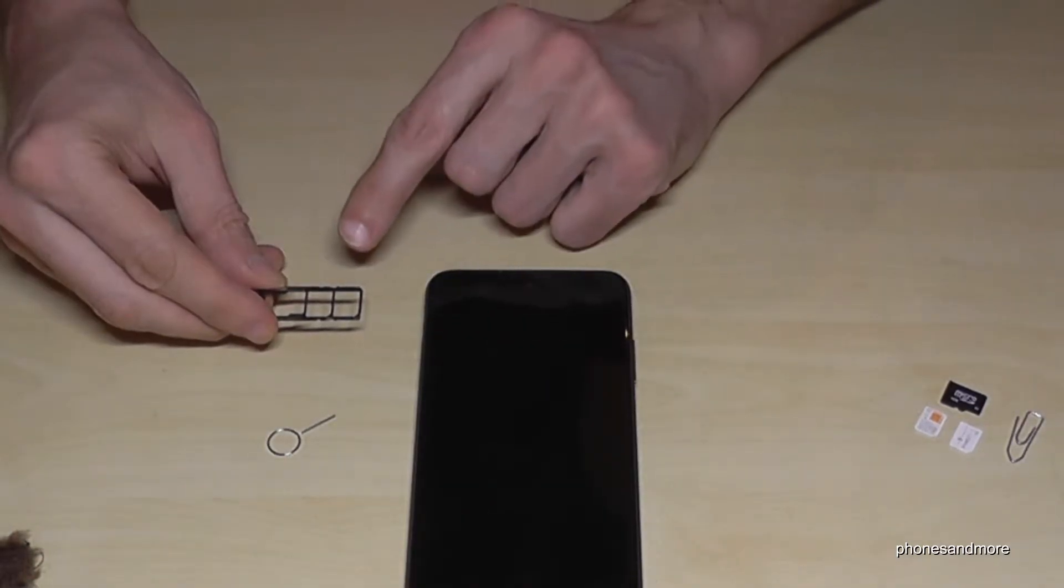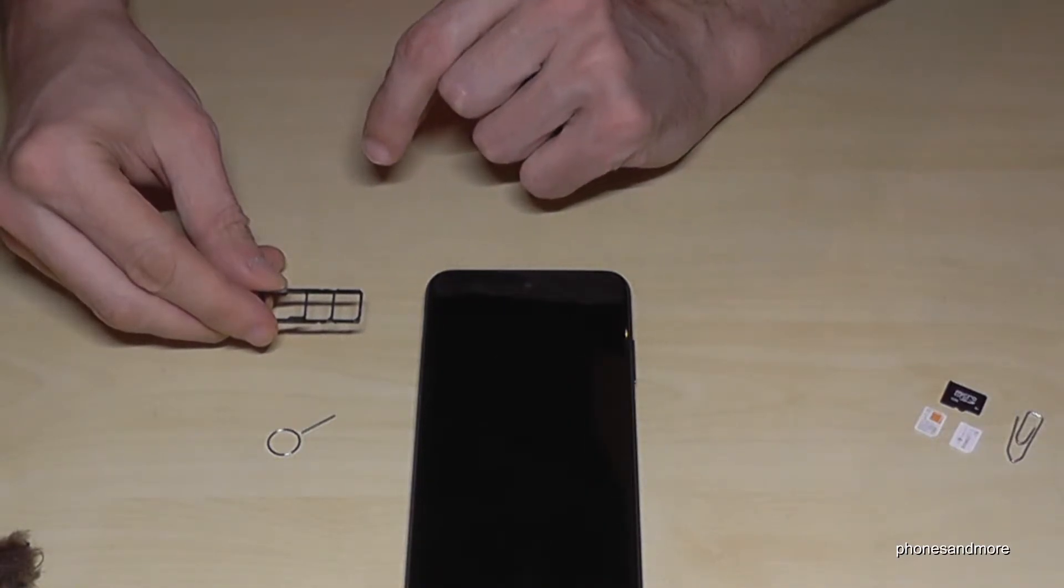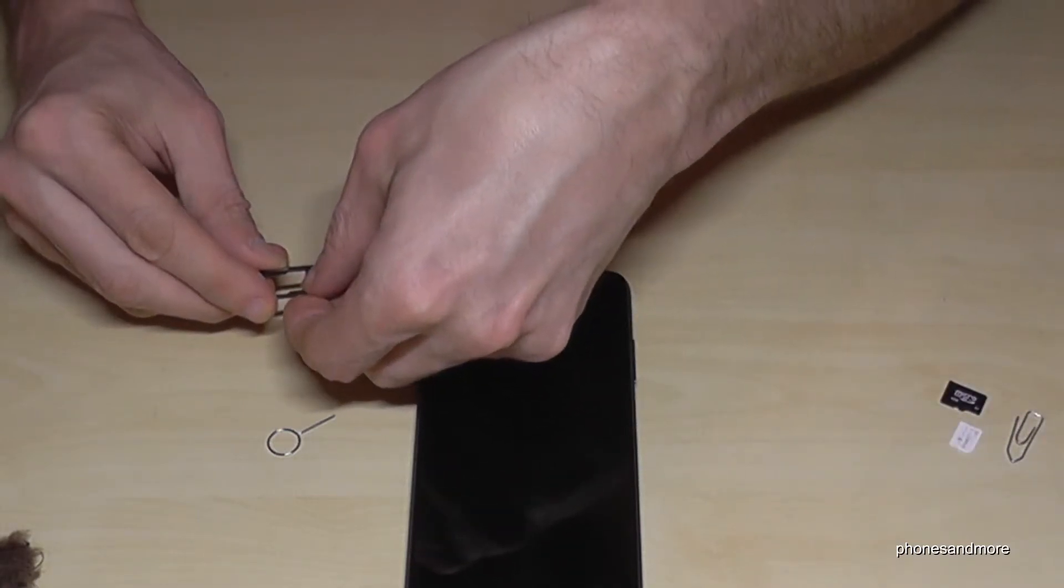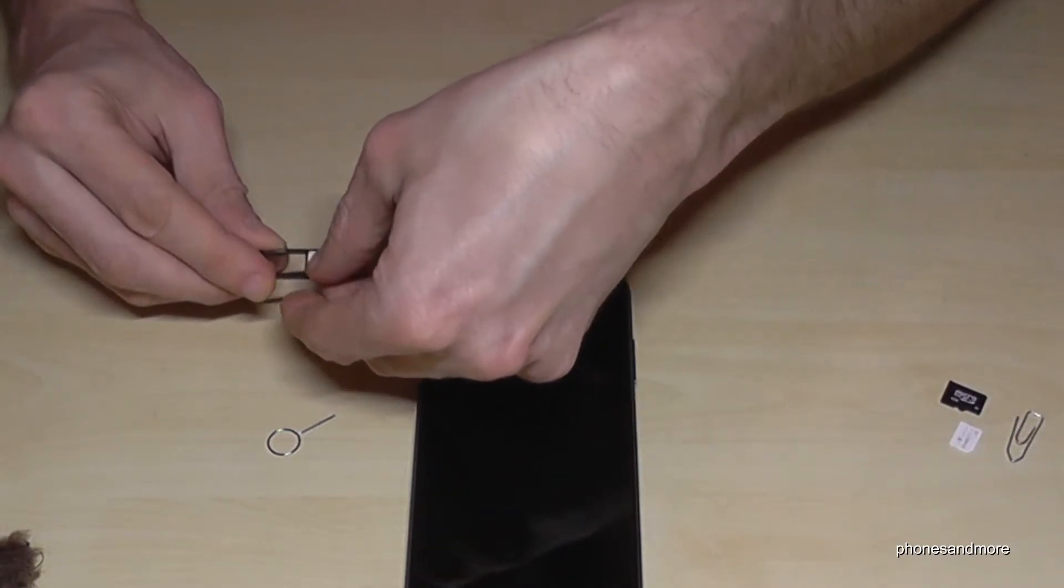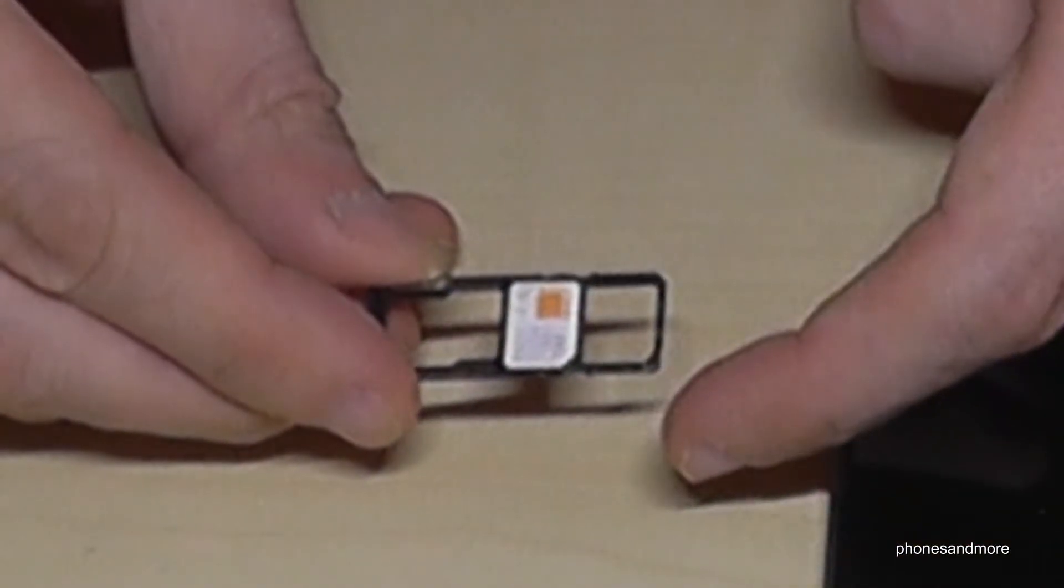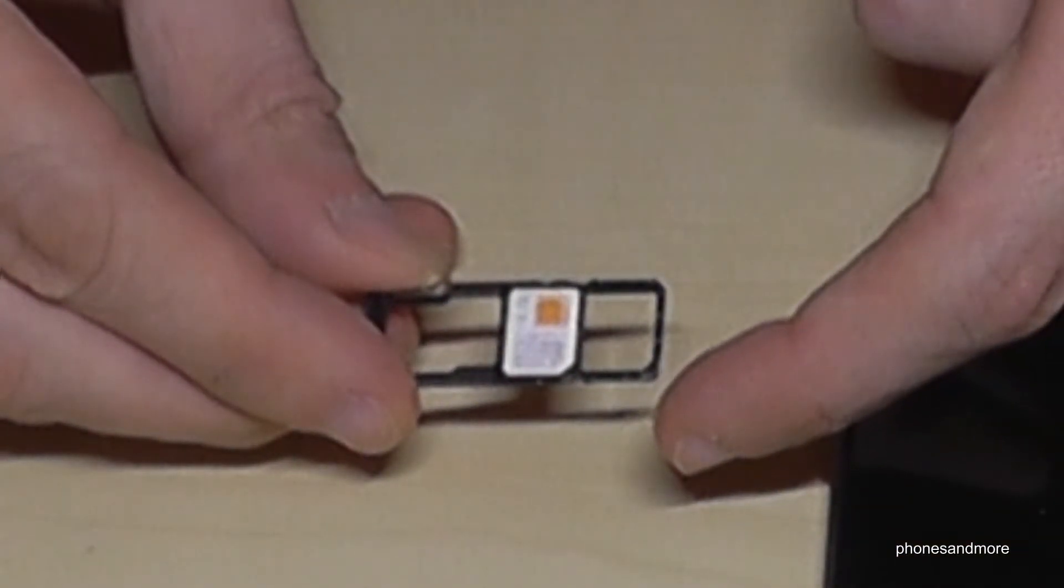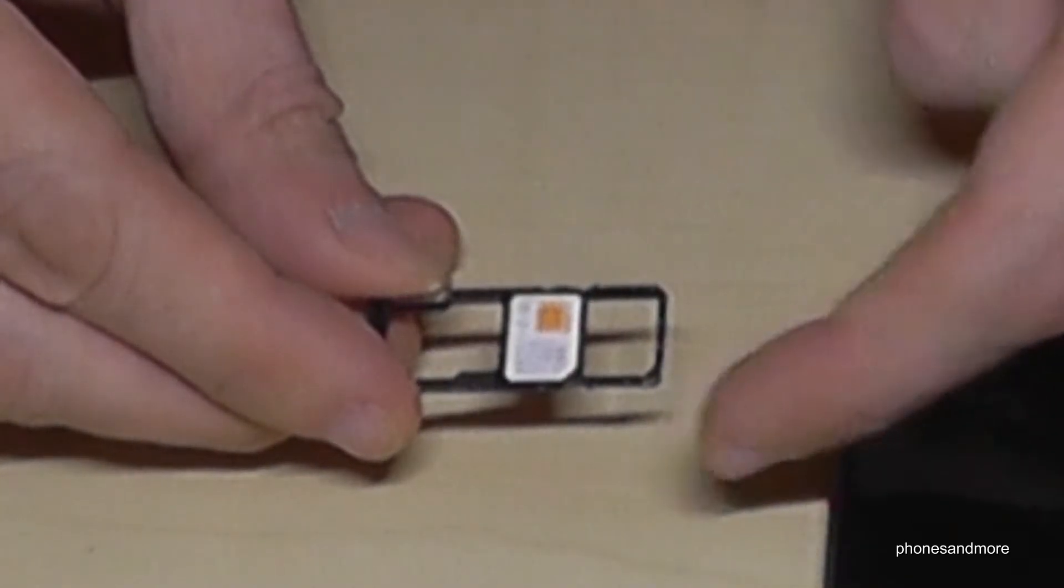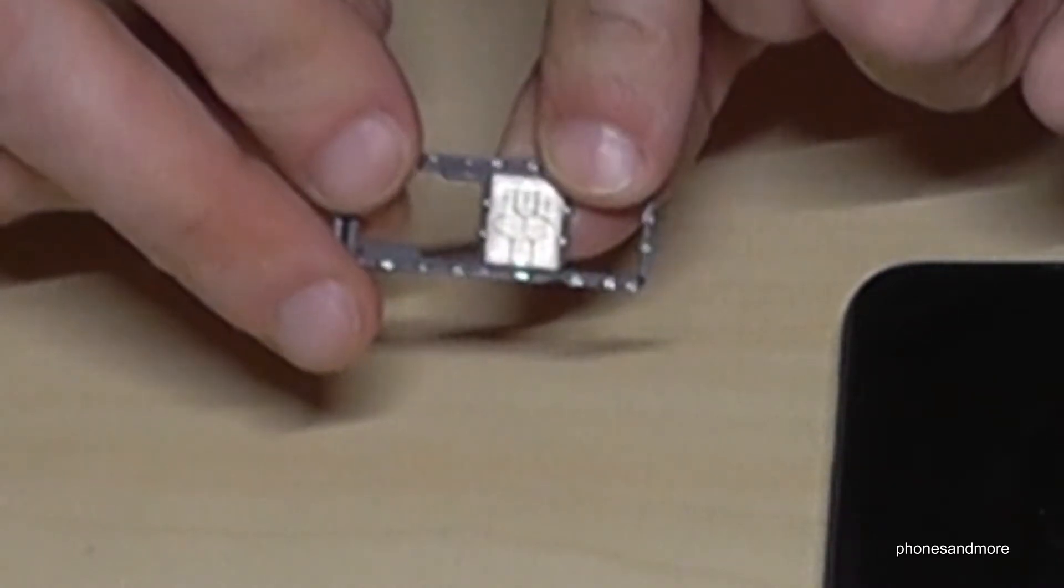Very nice is on that SIM tray that you are able to insert two SIM cards at the same time next to a microSD card. So let us start now with the first SIM card because you're always in the middle. So missing corner on missing corner and contacts are below.